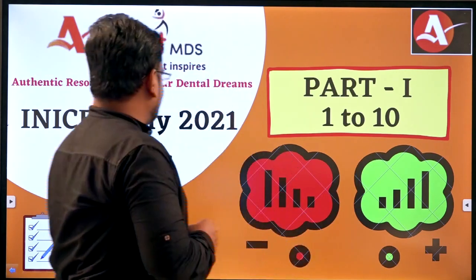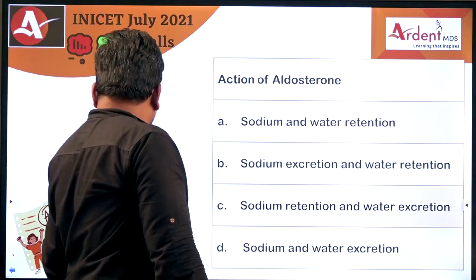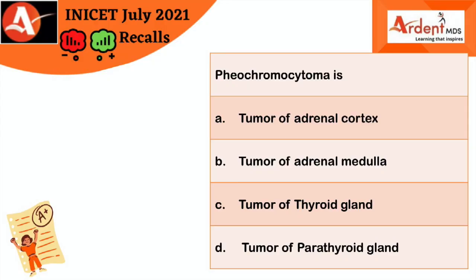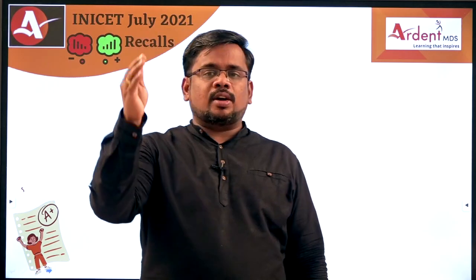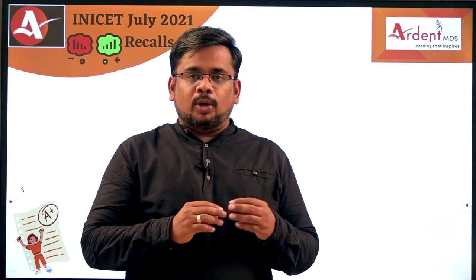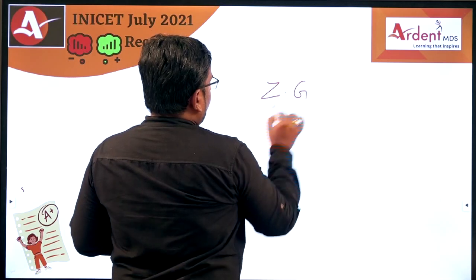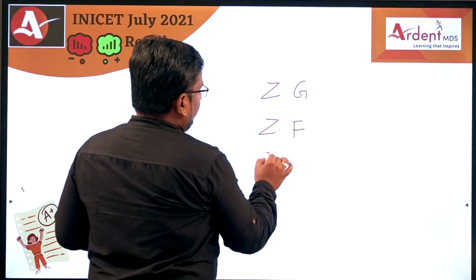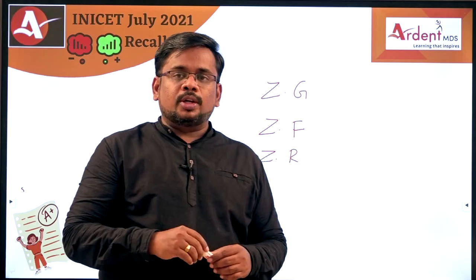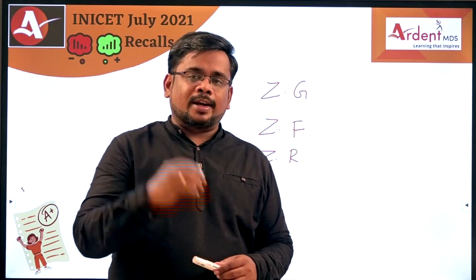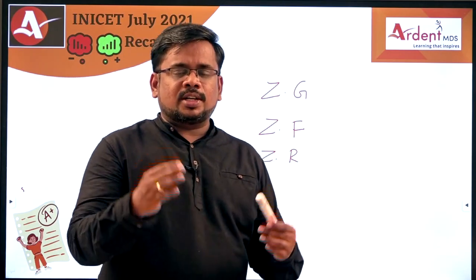The first questions — there were two questions asked from the same topic: one about the action of aldosterone, and the second about pheochromocytoma. Both are related to the adrenal gland, which has two parts: the outer layer called the adrenal cortex, and the inner layer called the adrenal medulla. The adrenal cortex has three layers: zona glomerulosa, zona fasciculata, and zona reticularis. The zona glomerulosa secretes aldosterone, otherwise called mineralocorticoids.